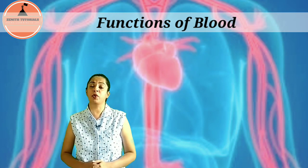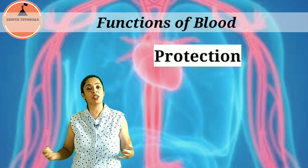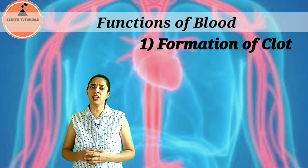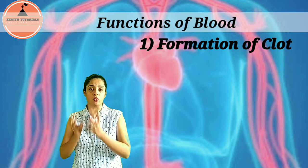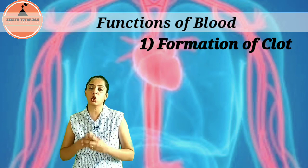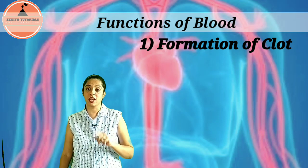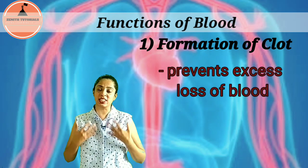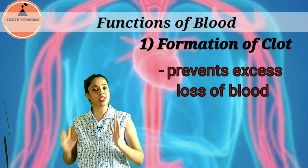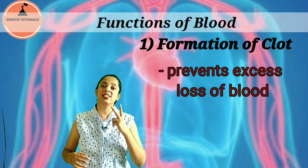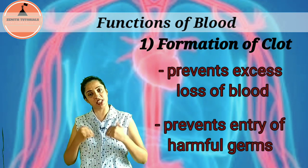Now let us study protection by blood. The first point is formation of a clot. Whenever there is a cut in a blood vessel, blood oozes out but after some time forms a clot. This clot helps in two ways: first, by preventing excess loss of blood — once the clot forms, blood cannot move out; and second, it prevents the entry of harmful bacteria and germs into our body.